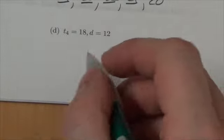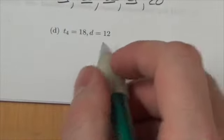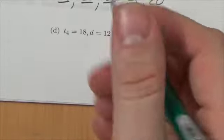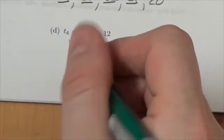All right, question 6d here. Calculate the first five terms of the sequence. This is in the arithmetic sequence section, so this is arithmetic.